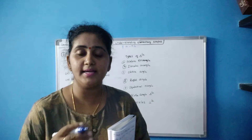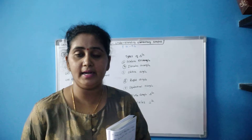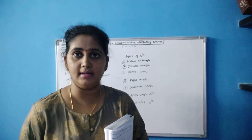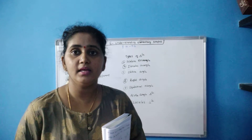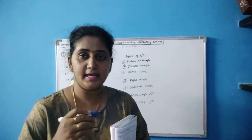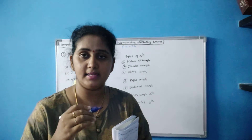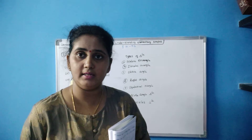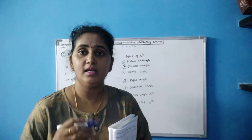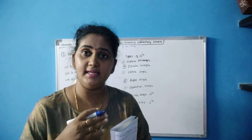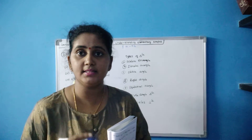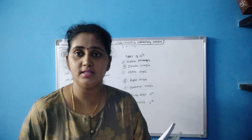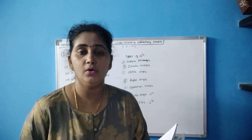If all three sides are of different length, that is a scalene triangle. If one angle is less than 90 degrees, it is an acute angle triangle. If it is greater than 90 degrees, then it is an obtuse angle triangle. So these are the triangles you should know.